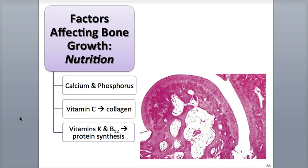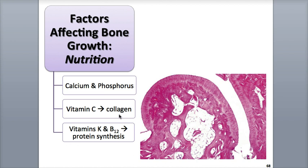There are several major factors that influence bone growth and remodeling, including diet and hormones. Bone requires abundant minerals from the diet in order to produce new bone matrix during growth and remodeling, especially calcium and phosphorus along with manganese, magnesium, and fluoride. Vitamins are also essential, with vitamin A helping to trigger osteoblast activity; vitamins C, K, and B12 are needed in order to secrete new collagen proteins; and vitamin D helps increase the absorption of calcium from the GI tract into the blood.